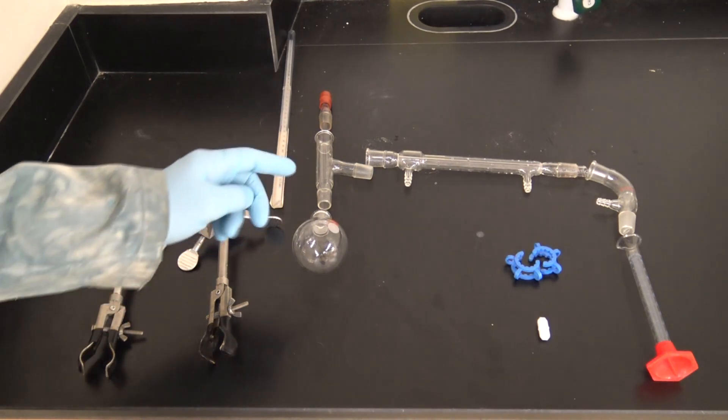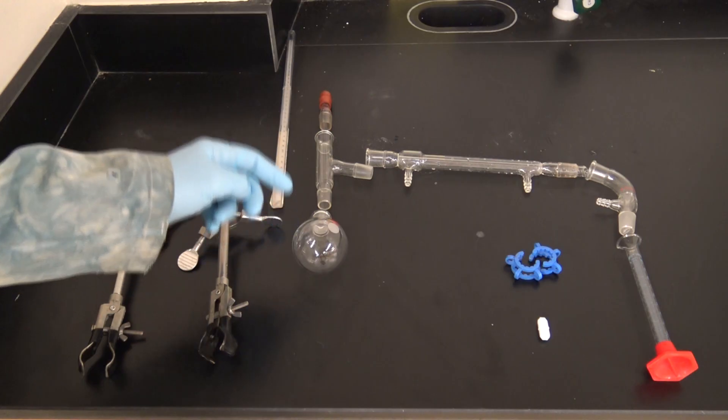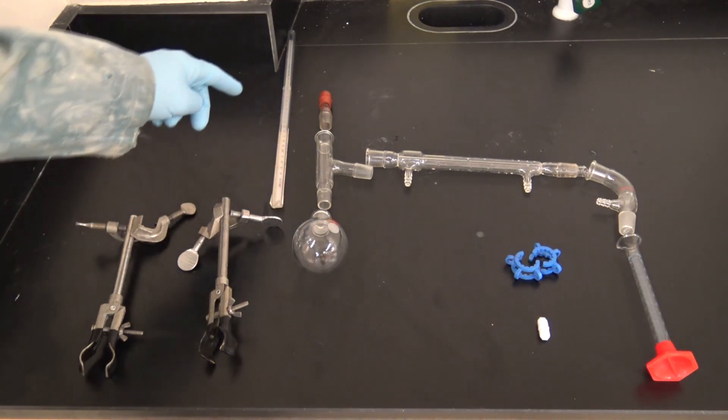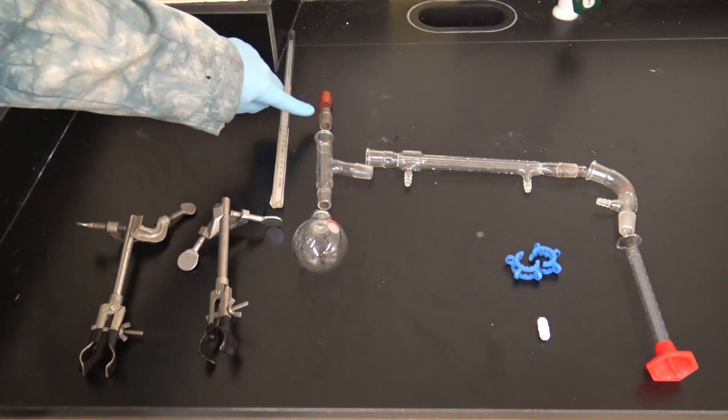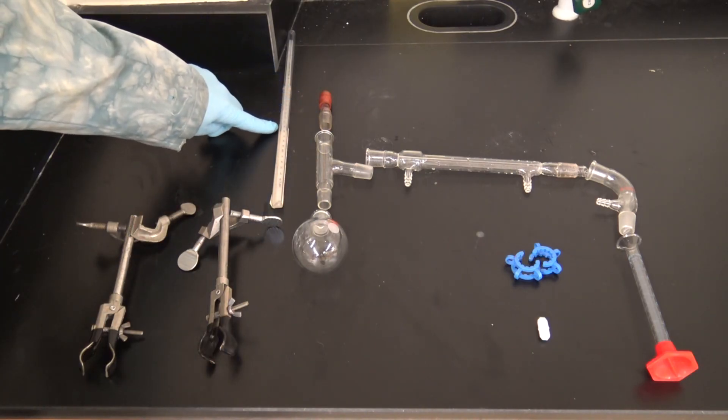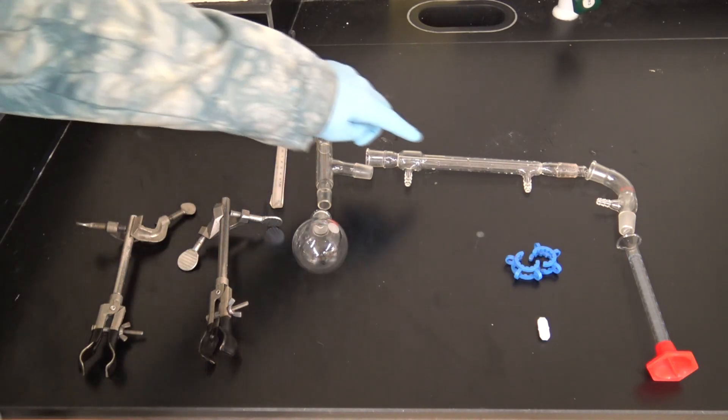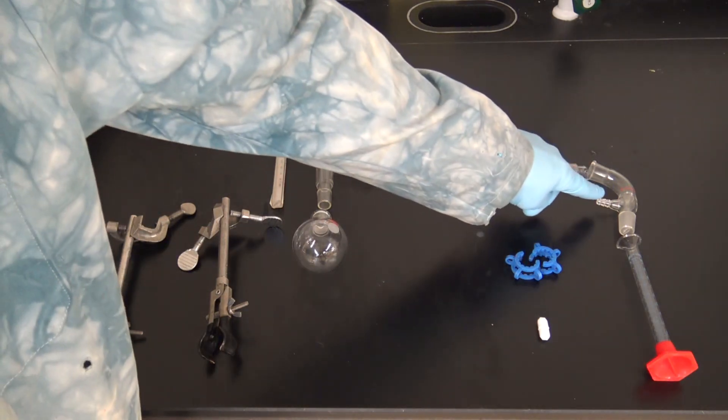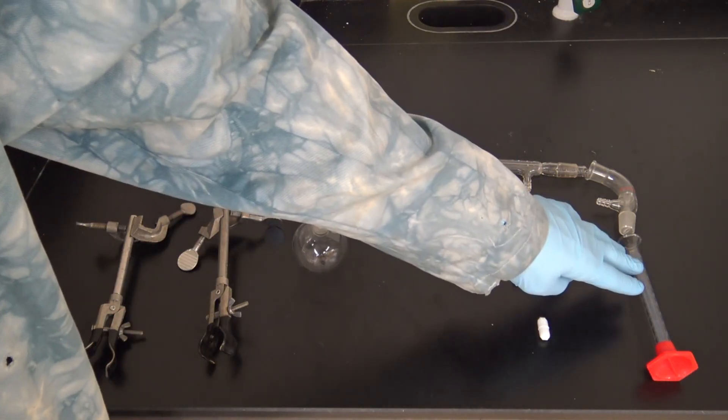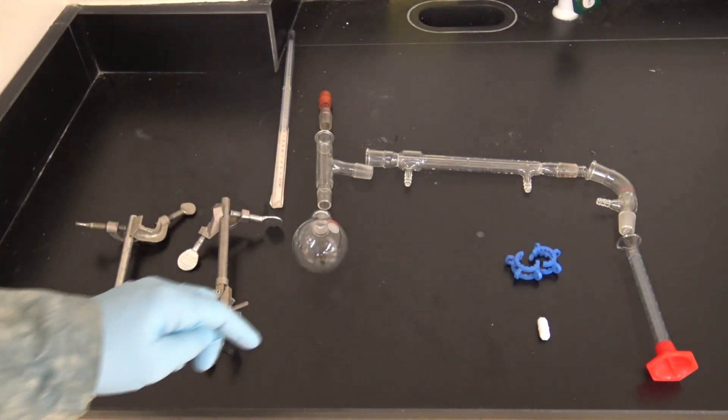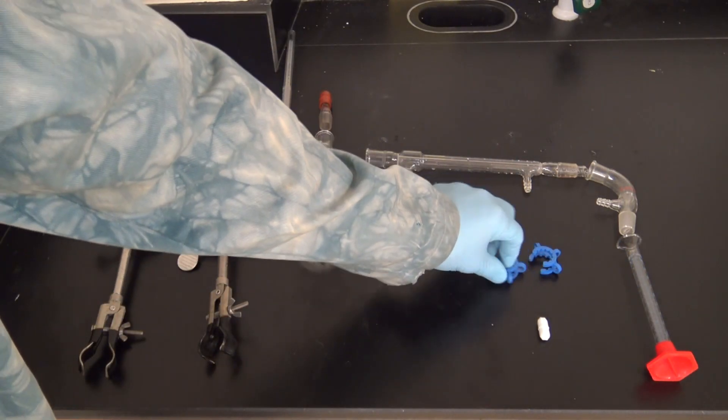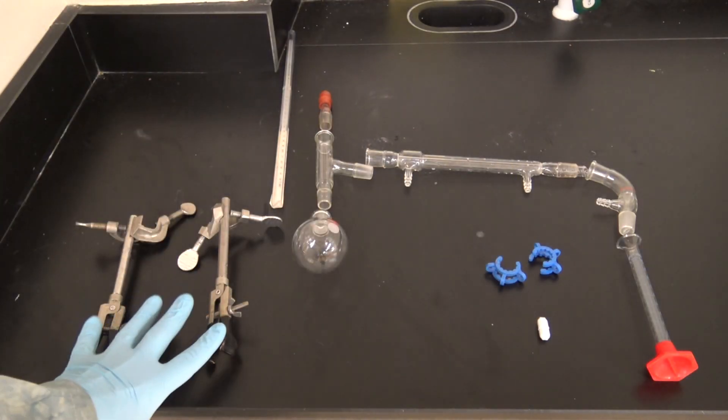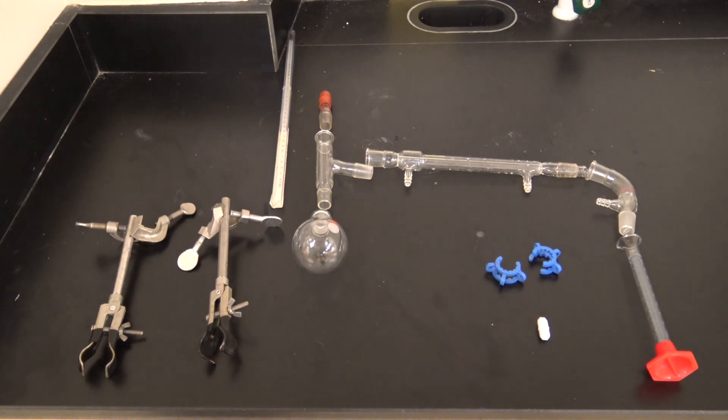Hey guys, we're going to build a simple still now. For that we're going to need a round bottom flask of appropriate size, a three-way connector to be our steelhead, a thermometer adapter and thermometer. To that we're going to connect a West condenser, a vacuum adapter that's going to direct flow down into a 10 ml graduated cylinder, and of course we're going to have some connectors and a spin bar and some other clamps to keep things in place.